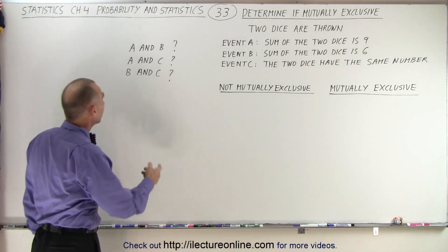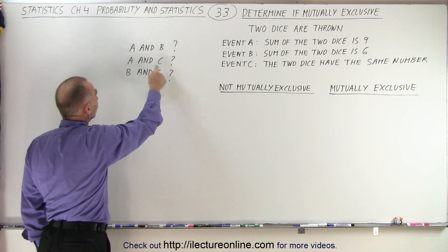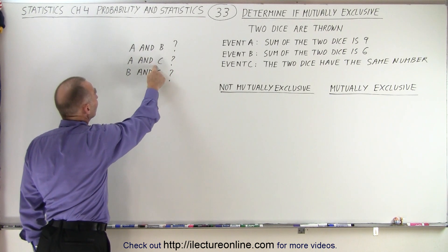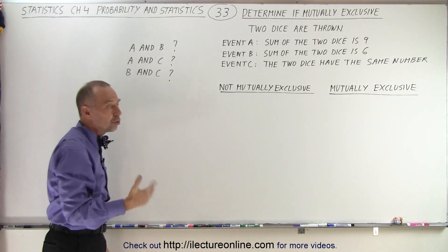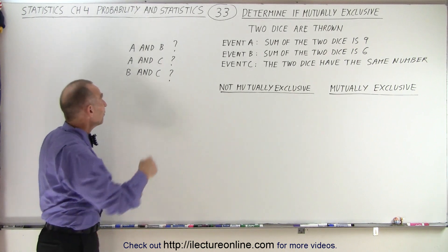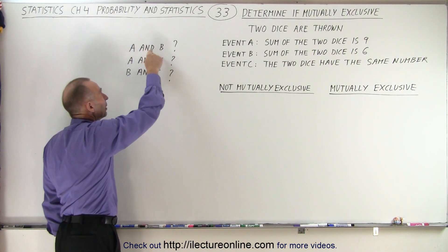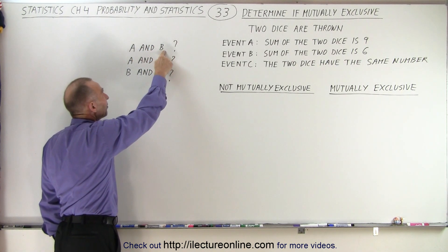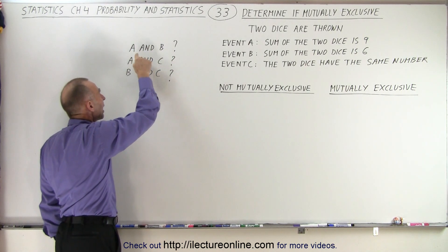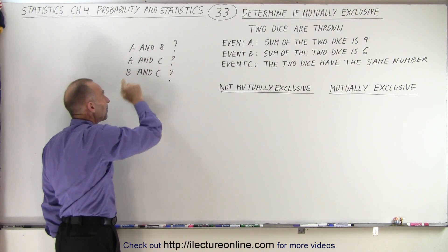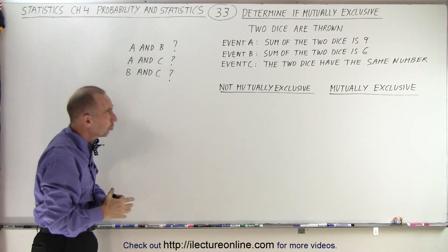We need to determine if A and B are mutually exclusive, if A and C are mutually exclusive, and if B and C are mutually exclusive. Again, if one can happen then the other one cannot happen. So if B happens then A cannot happen, if C happens then A cannot happen, if C happens then B cannot happen. Those would be examples of where they would be mutually exclusive.